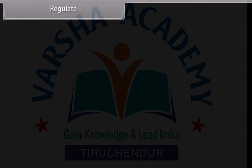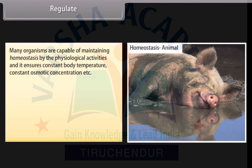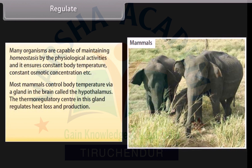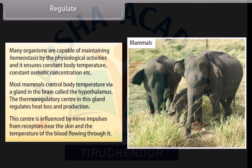Regulate: Many organisms are capable of maintaining homeostasis through physiological activities, ensuring constant body temperature and constant osmotic concentration. Most mammals control body temperature via a gland in the brain called the hypothalamus. The thermoregulatory center in this gland regulates heat loss and production, and is influenced by nerve impulses from receptors near the skin and the temperature of the blood flowing through it.